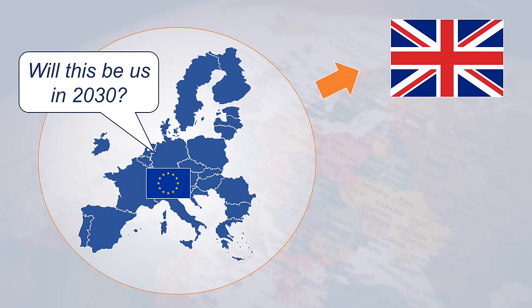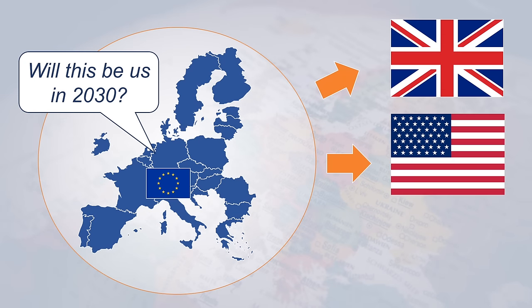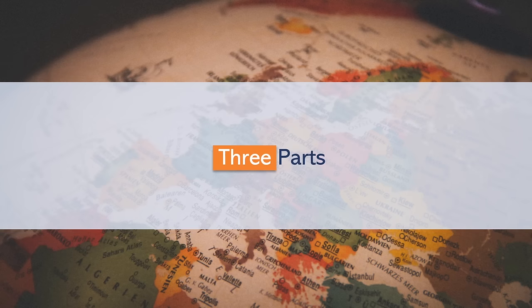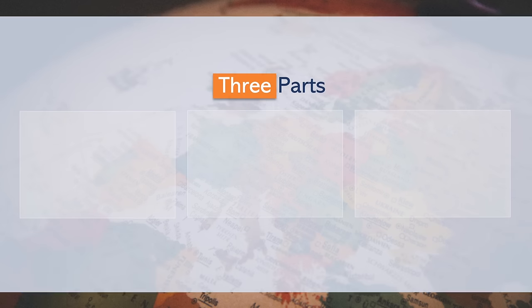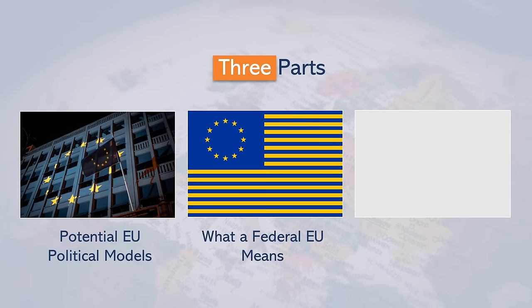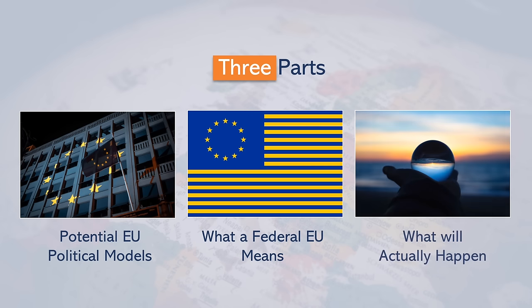A unitary model like the UK, or a federal model like the US and Switzerland? To answer this, this video will dive into three topics: firstly, what are the potential government models the EU could develop into; secondly, what does a federal EU even mean; and lastly, what will actually happen?